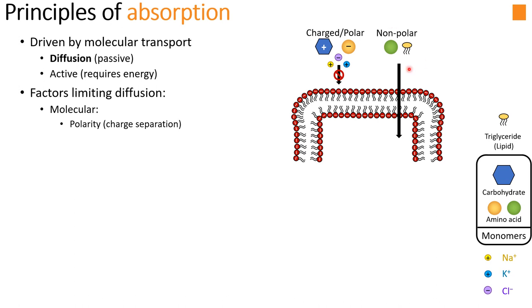Just because a molecule is nonpolar doesn't mean it can easily move through the membrane. One factor limiting movement is size — an amino acid or protein won't easily move through, even if nonpolar, whereas something like a triglyceride might be able to embed in the membrane due to its size and interactions, although triglycerides can be quite large themselves. The other key driver limiting diffusion is concentration — things move down their concentration gradient. If there is more sodium on the outside, there's more driving force for sodium to move in.